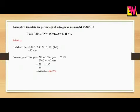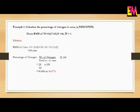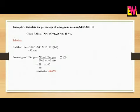Now let us see an example to find out the percentage of nitrogen in urea. The molecular formula of urea is given in the question and the atomic masses of individual elements present in this compound are also given. First we find out the molecular mass of urea, which is 60 AMU. Now our question is to find out the percentage of nitrogen only. So percentage of nitrogen equals weight of nitrogen divided by total weight of urea into 100, that is 28 by 60 into 100, which gives us 46.67%.